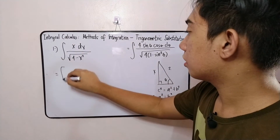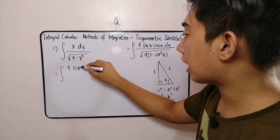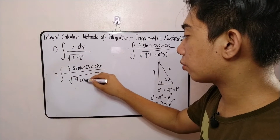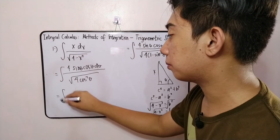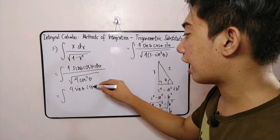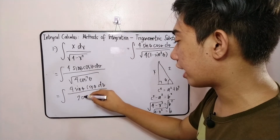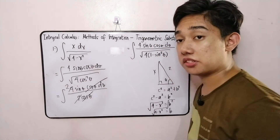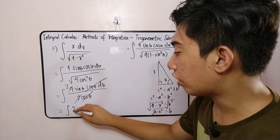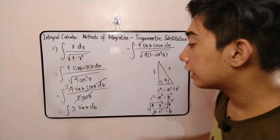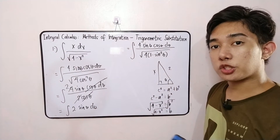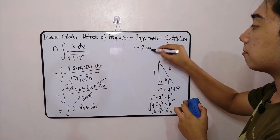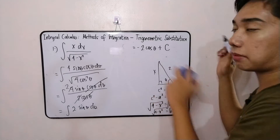Continuing the simplification: the integral becomes 4 sine theta cosine theta dθ all over 4 cos²θ. Taking the square root of 4cos²θ gives 2 cosine theta. We then have 4 sine theta cosine theta dθ over 2 cosine theta. Cancelling cosine theta and simplifying, what remains is the integral of 2 sine theta dθ, which is now a basic integral.